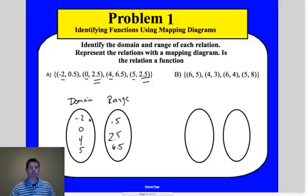So now what I'm going to do is I'm just going to draw an arrow from every one of my domains to its appropriate y values output, its range. So I draw an arrow over, the negative 2 was to 0.5, the 0 was to 2.5, the 4 was to 6.5, and the 5 also went to 2.5. So by definition that we talked about, a function is when we take every x value, every domain, and we compare it with one and only one range.